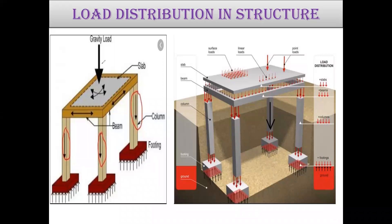Gravity loads come on the slab first. The slab transfers that load to the beams, the beams transfer it to the columns, and the columns transfer it to the footing. We need to apply dead load and live load on the slab.